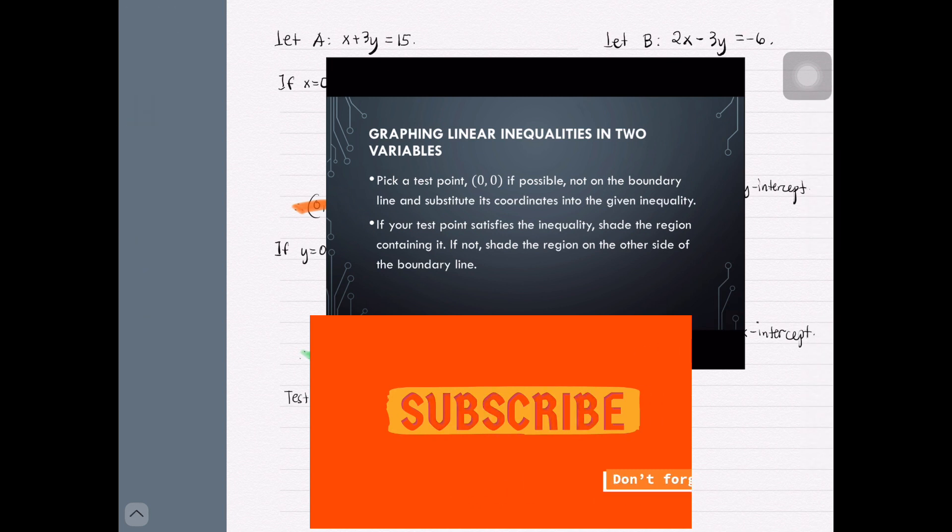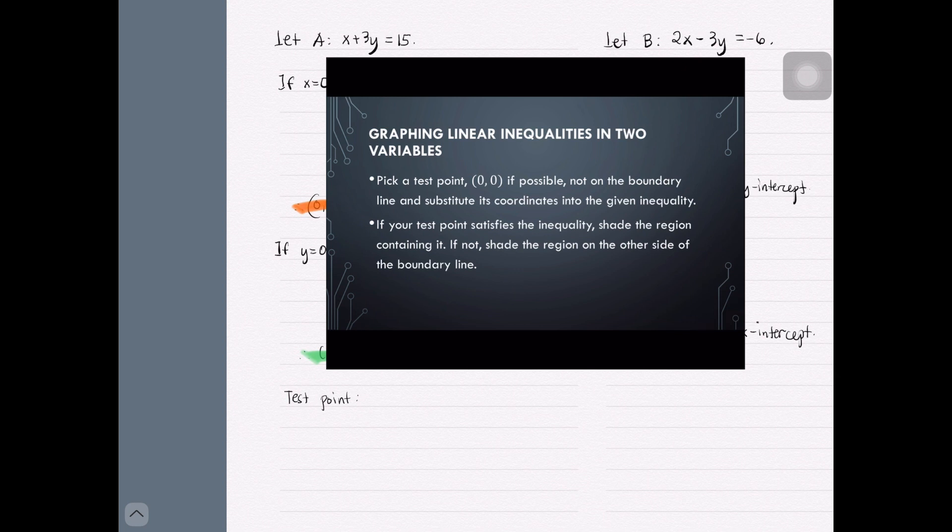Since (0, 0) is not on the boundary line that we had earlier, we can have this as a test point. Considering our original inequality which is x plus 3y greater than or equal to 15, substituting 0 to x and 0 to y will have this. Notice that 0 is not greater than or equal to 15. Therefore, (0, 0) does not satisfy the inequality x plus 3y greater than or equal to 15.